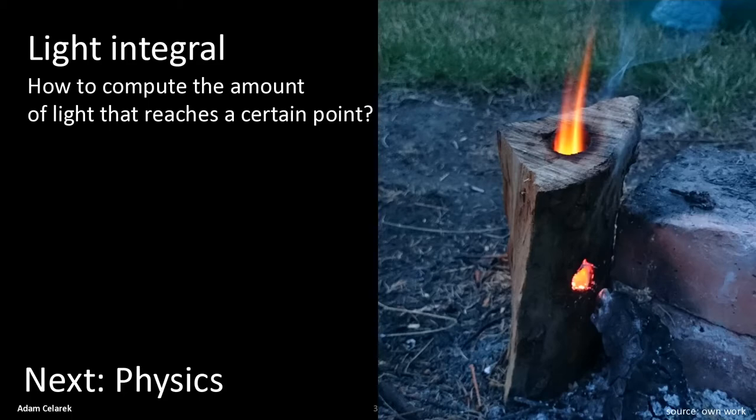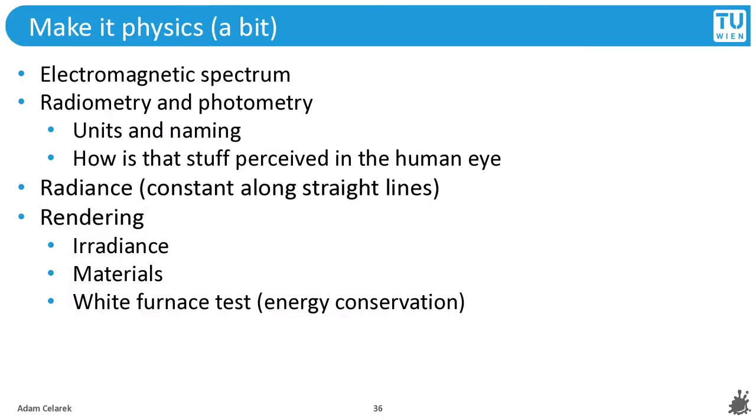Next we will come to physics. This is an overview. We will first briefly cover the electromagnetic spectrum, then we will go a bit into radiometry and photometry, that is units and how stuff is perceived by human eyes. Then we will go a bit more into radiance, and finally we will look at stuff that is important for rendering.